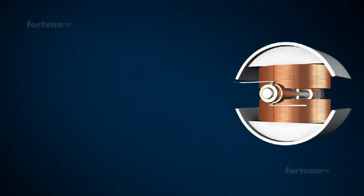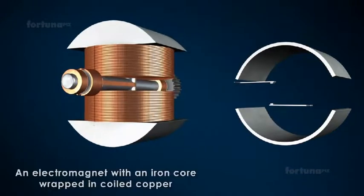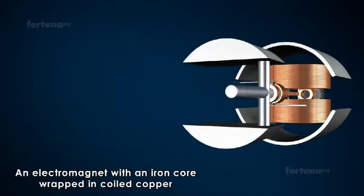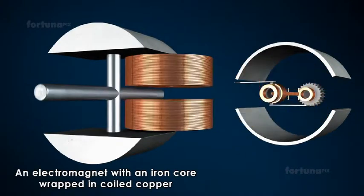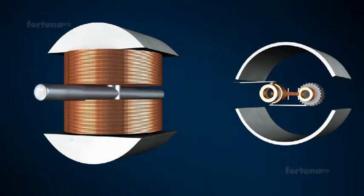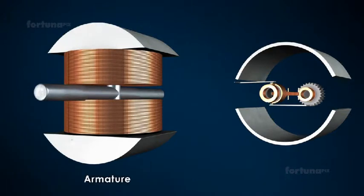A basic electric motor is made of an electromagnet with an iron core wrapped in coiled copper, also referred to as an armature.